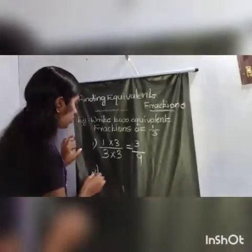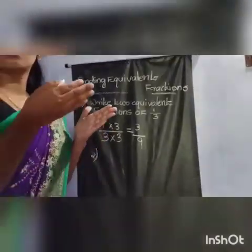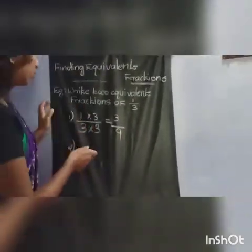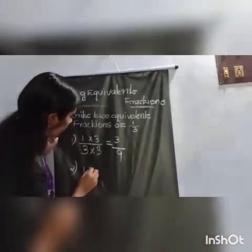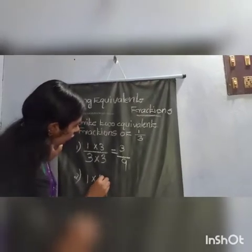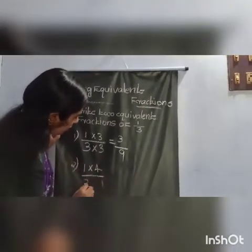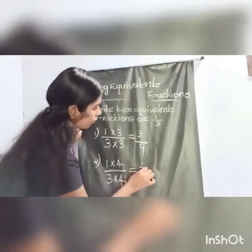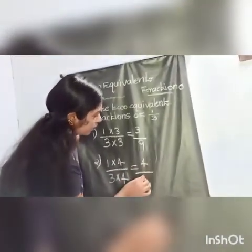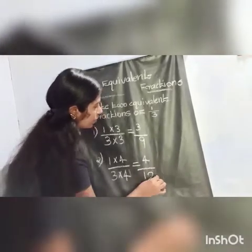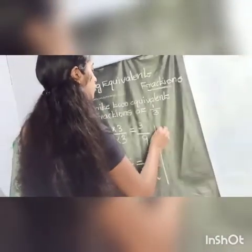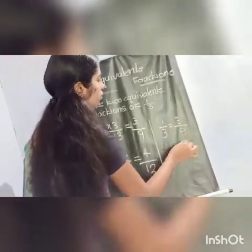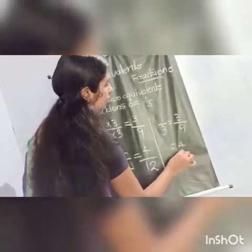For the second one, we multiply both numerator and denominator by the same number. We take 4. So 1 into 4 by 3 into 4 equals 4 by 12. Therefore, 1 by 3 equals 3 by 9 equals 4 by 12.